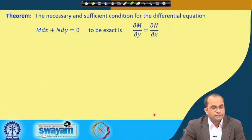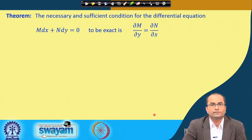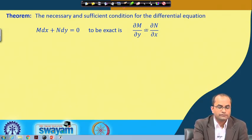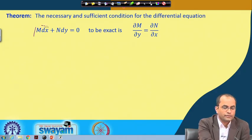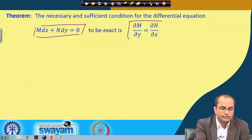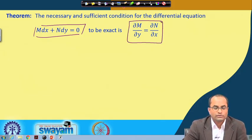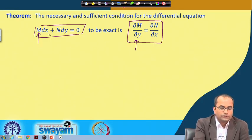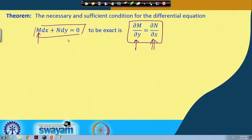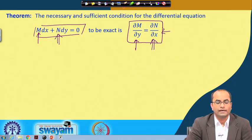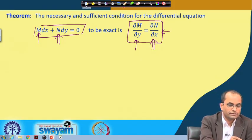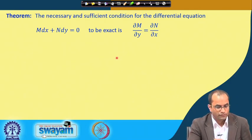There is a nice result: the necessary and sufficient condition for the differential equation M dx + N dy to be exact is that ∂M/∂y equals ∂N/∂x. This condition is both necessary and sufficient for exactness, and since it is a very important result, we will go through its proof.